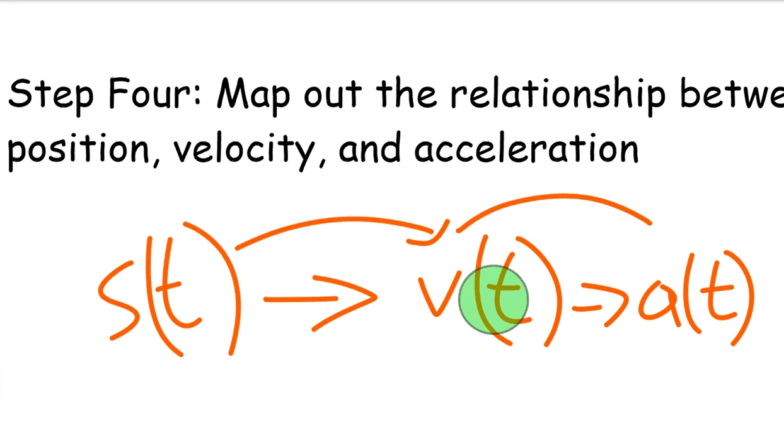And if you take the derivative of velocity, V(t), V'(t) would be A(t). So we are given the position function in order to figure out velocity. We have to take the derivative, which is why I like to write this map out.